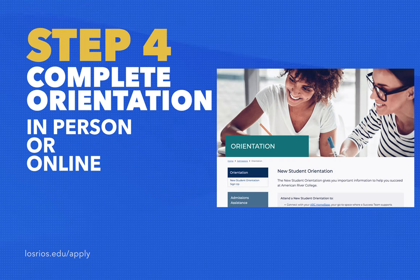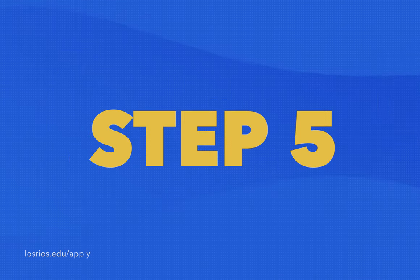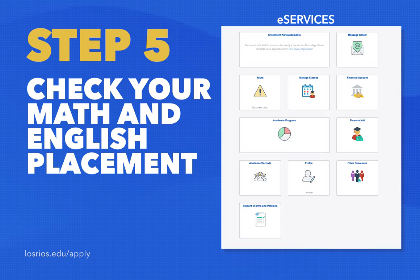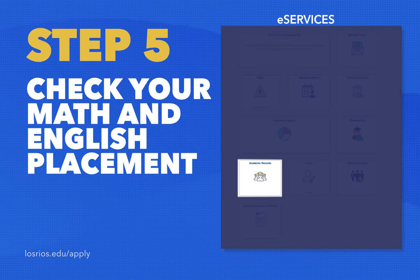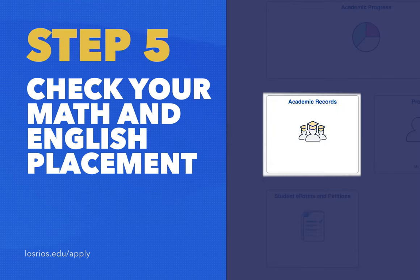Step four: complete orientation sessions online or in person. Step five: check your math and English placement to determine which math and English courses you should enroll in.